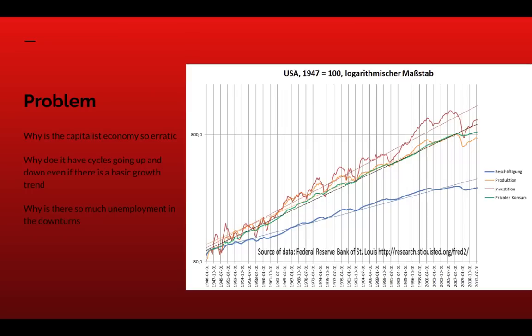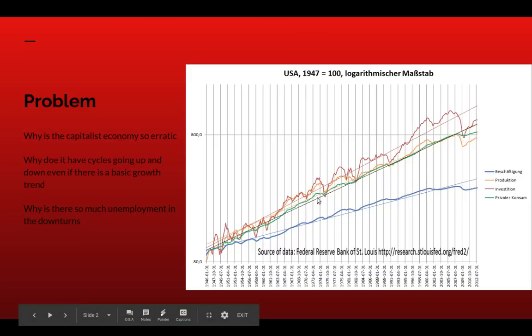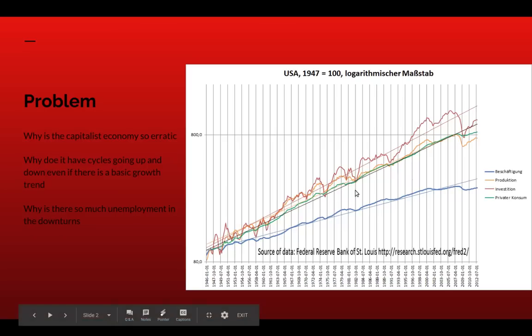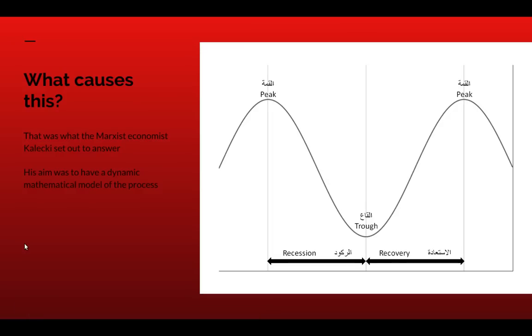The problem we have to explain is why is the capitalist economy so erratic? Why does it have cycles going up and down, even when there's a basic growth trend? We see the cycle of investment — peaks and troughs — and similarly peaks and troughs in employment, not so marked, except in this latest recession. But why does it have this structure? Why is there so much unemployment in the downturn, even when there's an underlying growth trend from the 1940s to 2012 or so?